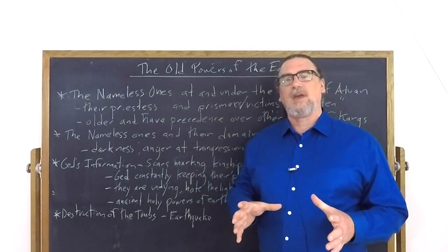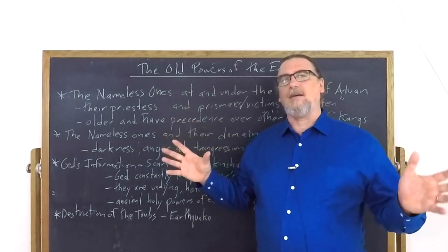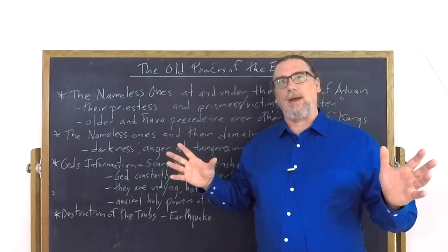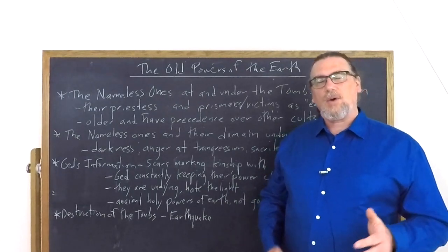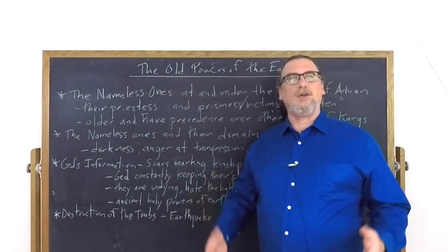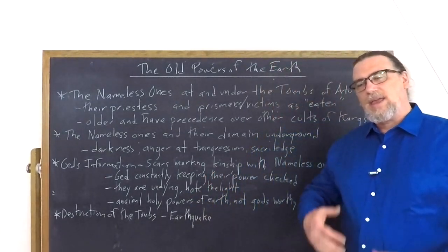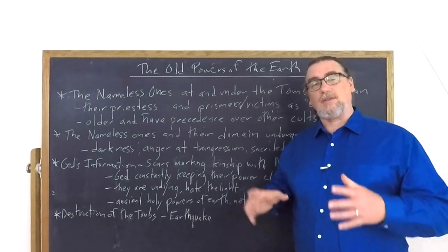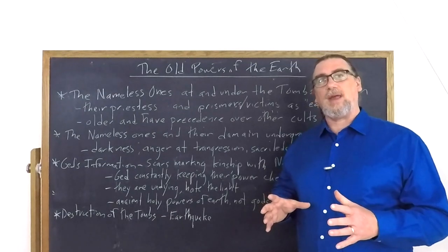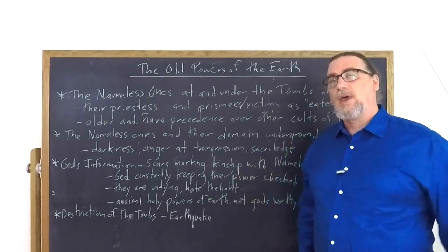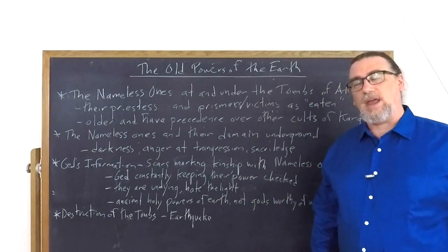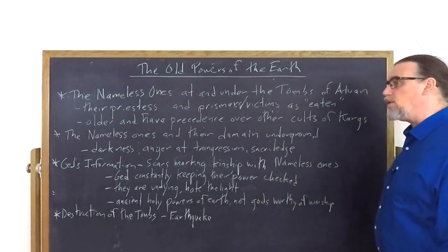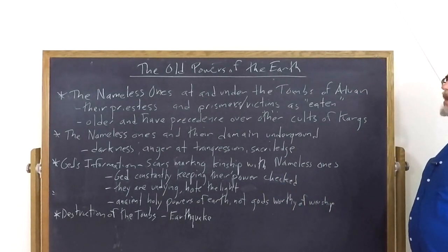So they're localized. They don't have a lot of sway over what's going to happen on other islands or even quite so much in other parts of Atuan. Yet early on in the Kargish civilization, this became a place where the Nameless Ones were consulted through a form of divination.